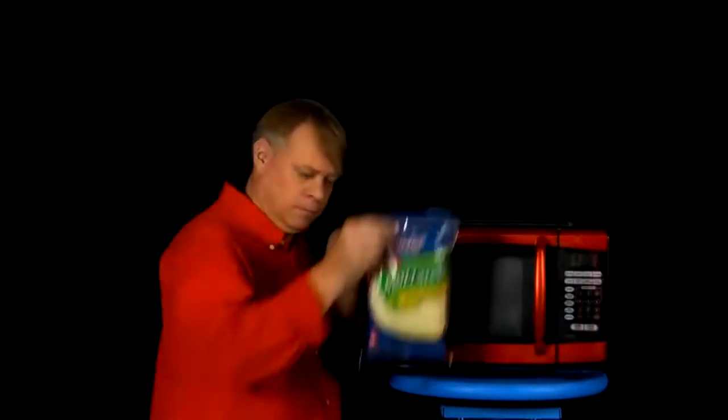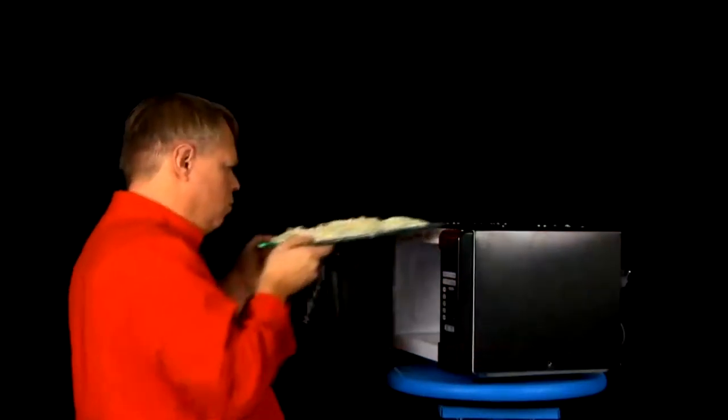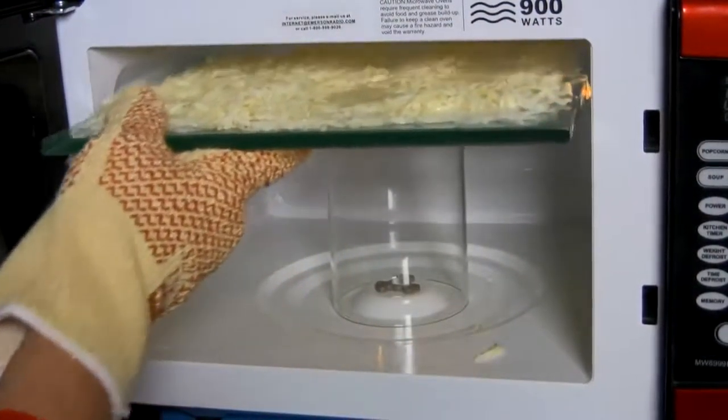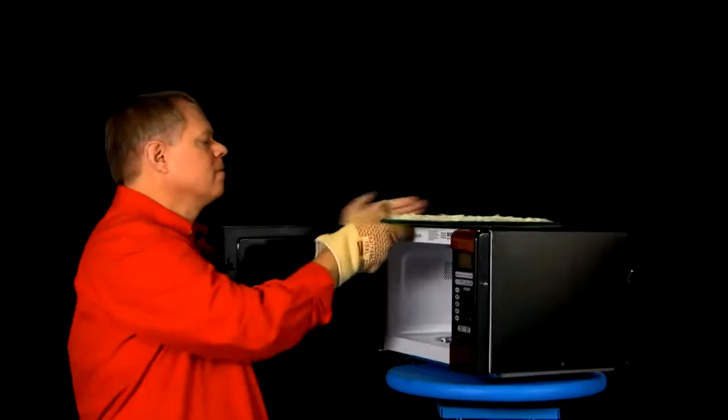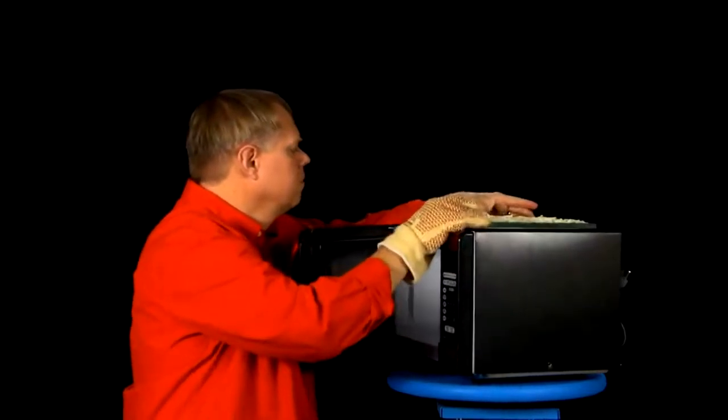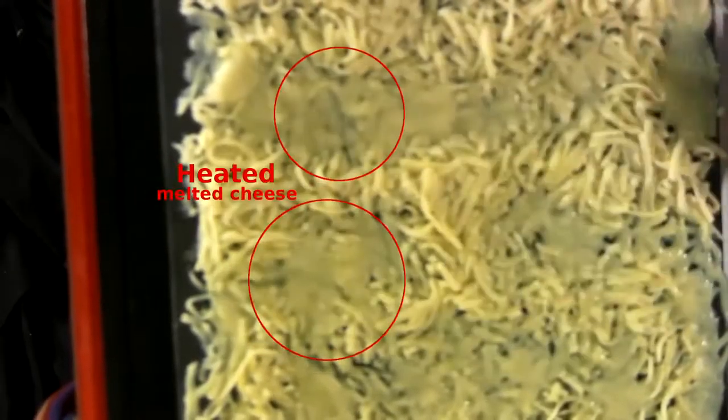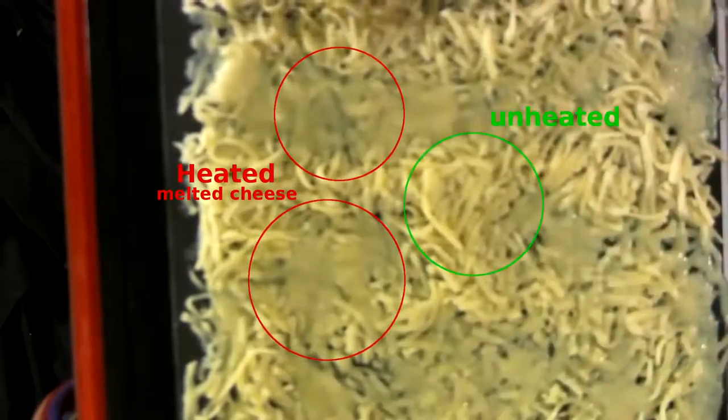Now, you can get an idea of the wavelength of the energy emitted from the magnetron using cheese. Now, you can see on here sections where the cheese is completely melted and other sections where it's completely unheated.